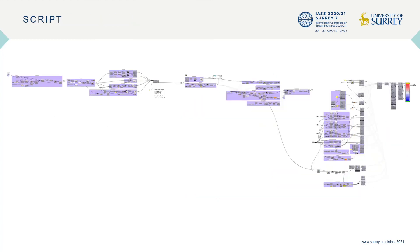Throughout the structural design process, we used the Grasshopper visual programming interface. Since Kangaroo and Karamba are both Grasshopper-based software, we achieved maximum parametric flexibility. This allowed us to explore many options to choose the best solution for our design needs.